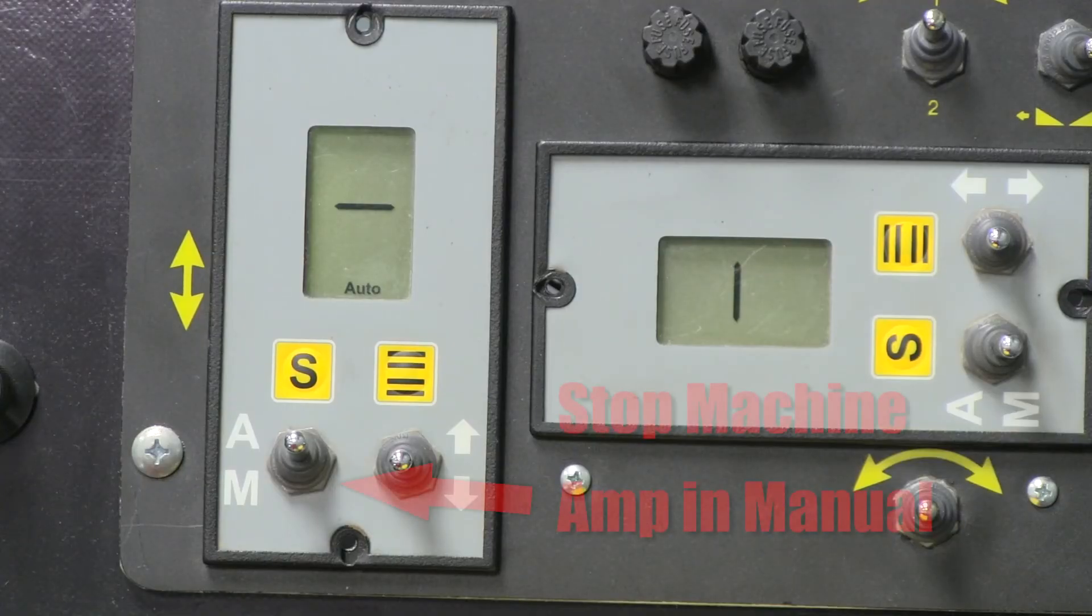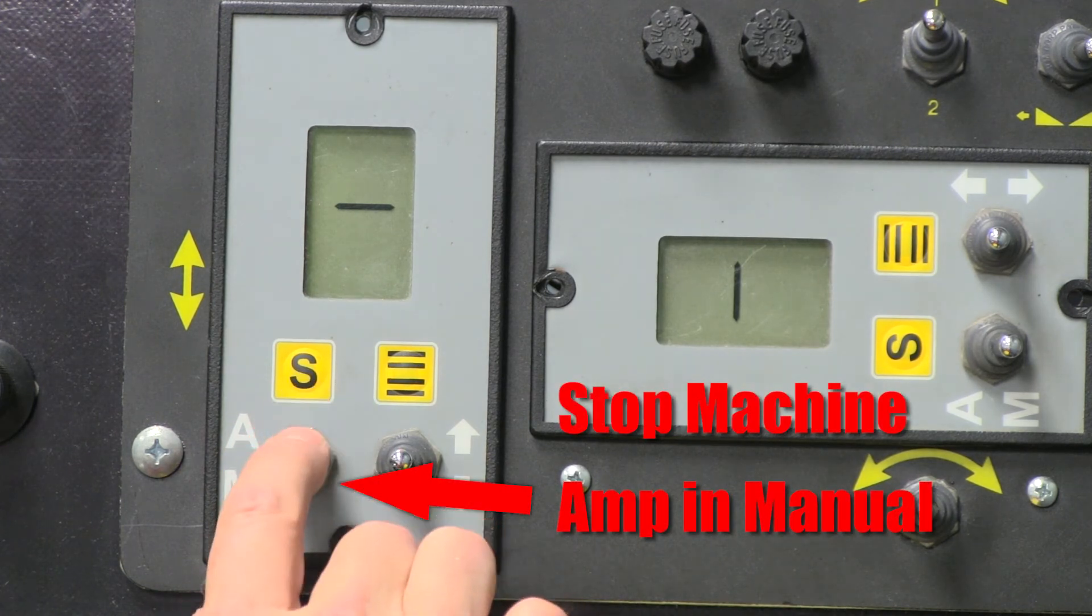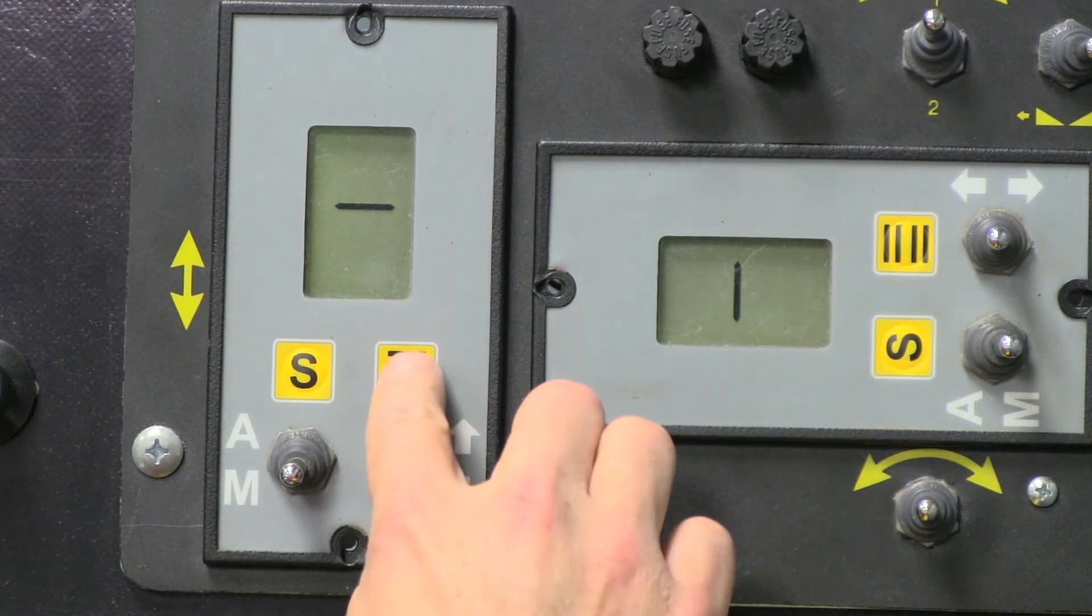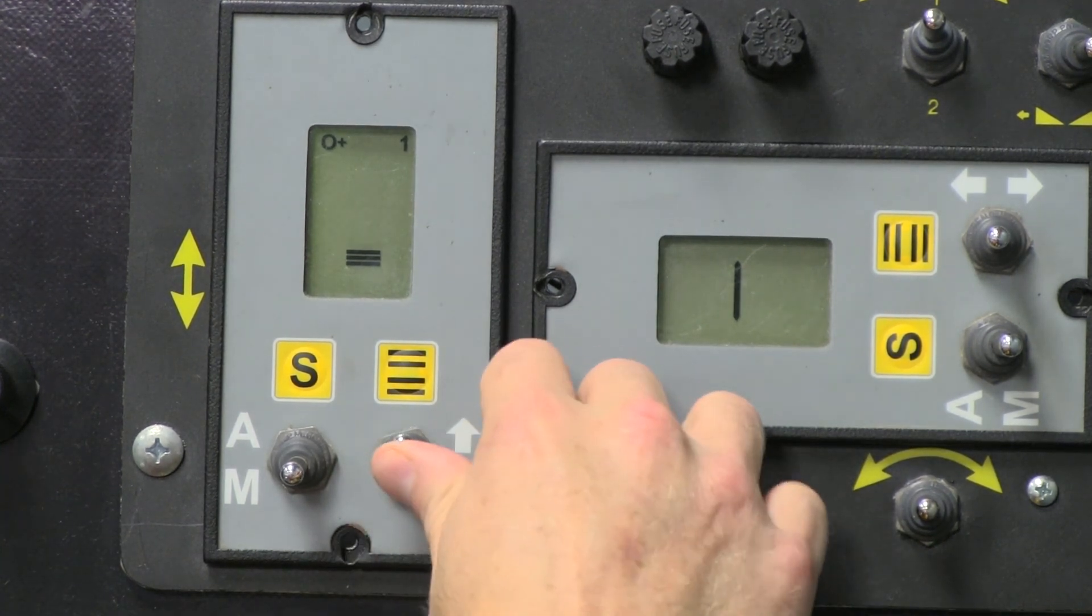Again, you should always make changes while the machine is stopped and the Smart Amp is in manual. To adjust the dead band, press the Menu button. The screen will change.